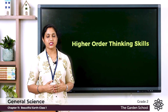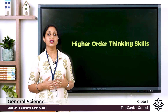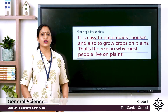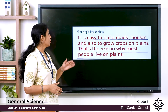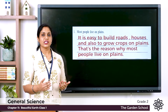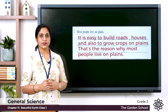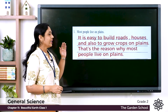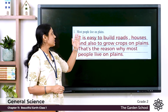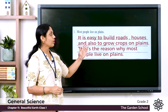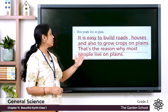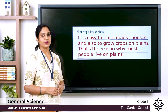Next we have higher order thinking skills questions. Question one: why do most people live on plains? Answer: it is easy to build roads and houses, and also to grow crops on plains. That is the reason why most people live on plains.